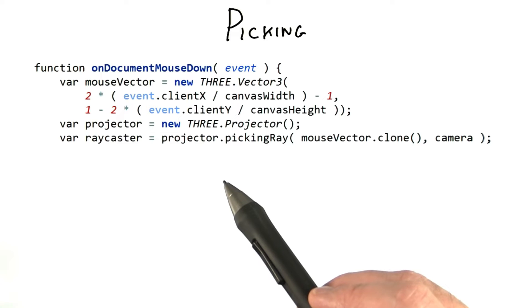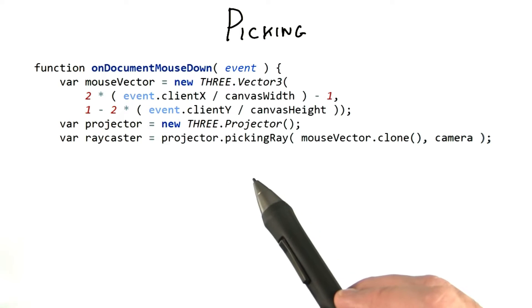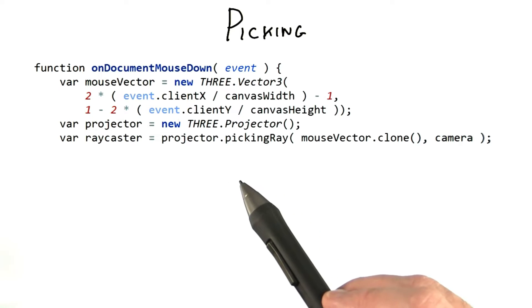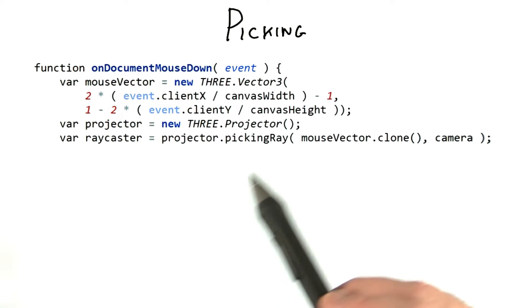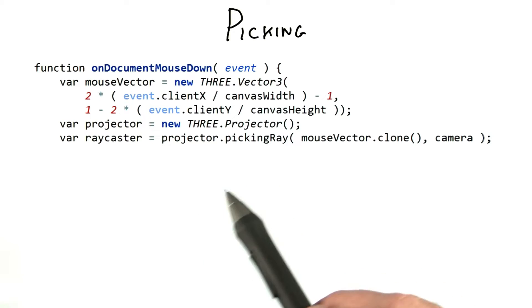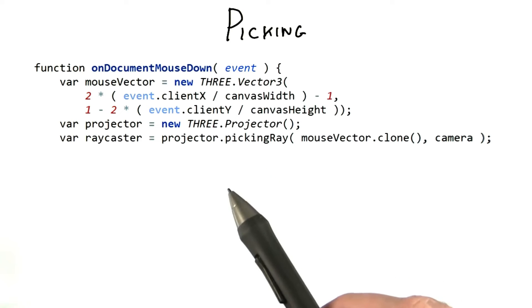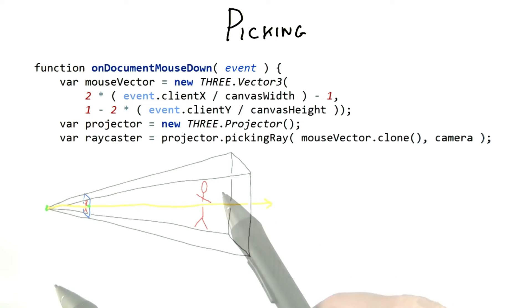The bulk of the code fires a ray from the eye into the world. This is a common way to perform picking. WebGL itself is focused on rendering, so has no real support for picking and other forms of interaction. It's up to the program to figure this out.